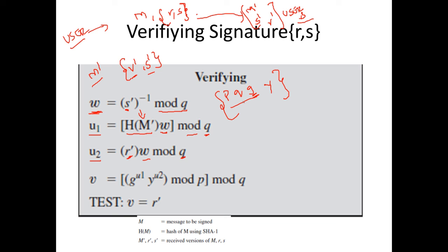After computing U1 and U2, user B computes V = (G^U1 · Y^U2 mod P) mod Q, using known values U1, U2, G, Y, P, and Q. Finally, if V equals R' — the received R component of the signature — then the signature is valid, and the receiver can conclude the message is authentic. This completes the Digital Signature Standard algorithm.